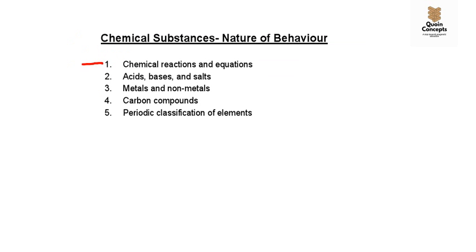This unit is divided into five chapters. Chapter 1 is Chemical Reactions and Equations. Chapter 2 is Acids, Bases and Salts — covering properties, uses, and chemical reactions. Chapter 3 is Metals and Non-Metals — covering physical and chemical properties and uses. Chapter 4 is Carbon Compounds — covering the versatile nature of carbon, bonding, and compounds formed. Chapter 5 is Periodic Classification of Elements. The number of videos per chapter will vary as per requirement.